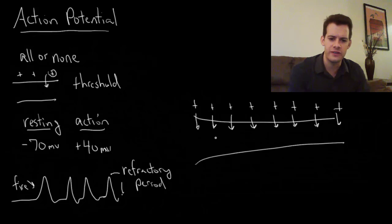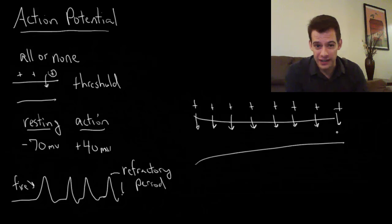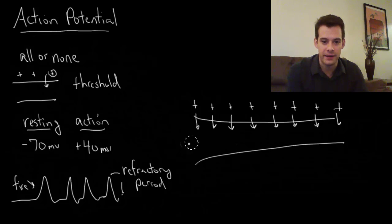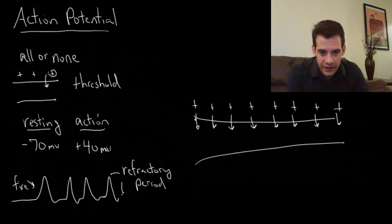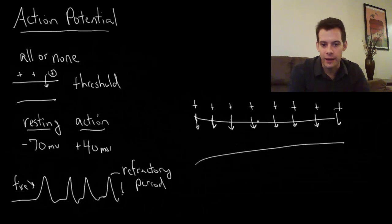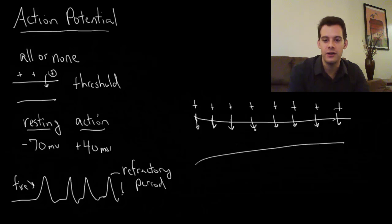The important thing to note is that nothing is actually moving down the axon — there's no particle that has to physically travel down that distance. What's happening is each ion moves in and then the pumps push it back out, and then the next one moves in and gets pushed back out. In this way, the message travels all the way down to the end of the axon without anything actually having to travel.